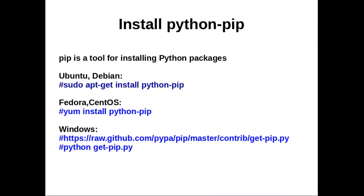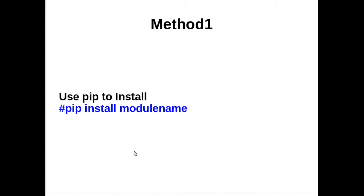Let's install pip. Pip is a tool for installing Python packages. Ubuntu users can install pip using the apt-get install command. Fedora users can install pip using the dnf install command. Windows users have to download get-pip.py and then run python get-pip.py.